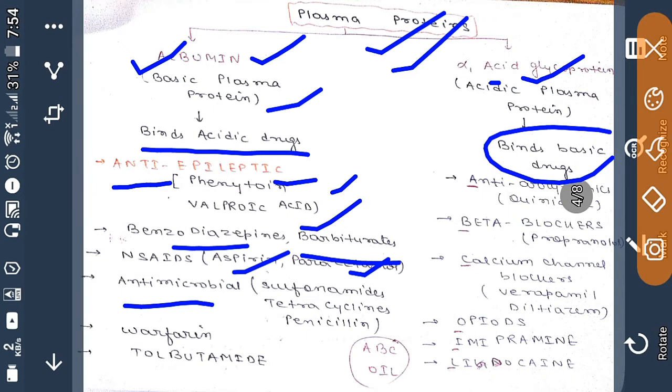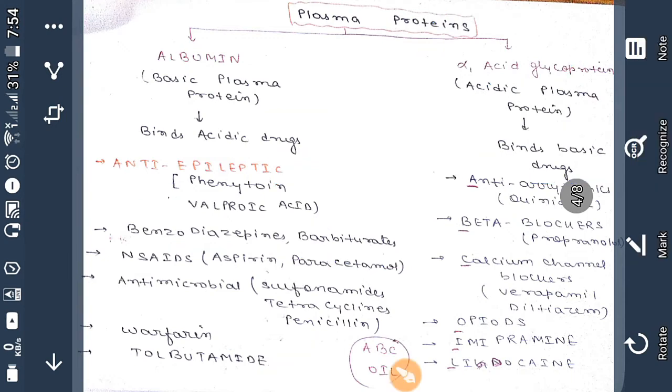Antimicrobial drugs, mostly sulfonamides, tetracycline, penicillin, warfarin, and tolbutamide, these drugs will bind to albumin. Whereas basic drugs which are antiarrhythmic drugs, almost all antiarrhythmic drugs will bind to alpha-1 acid glycoprotein. One example is quinidine.